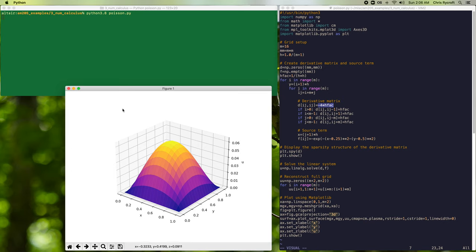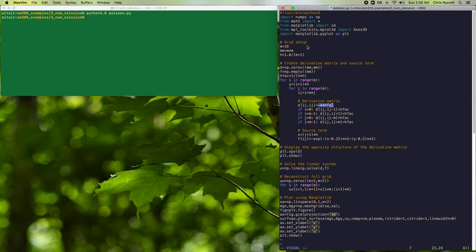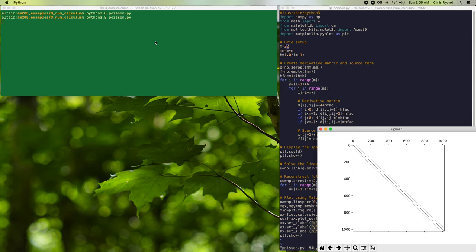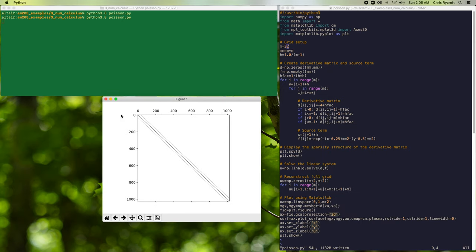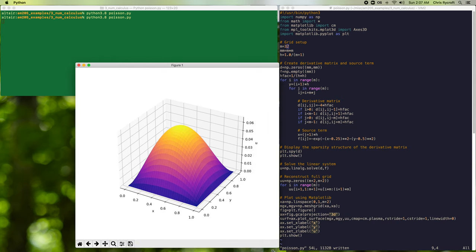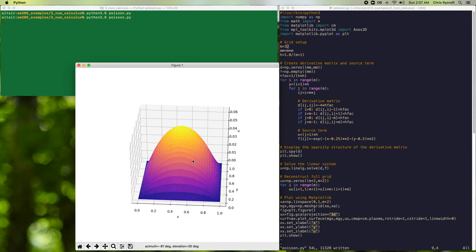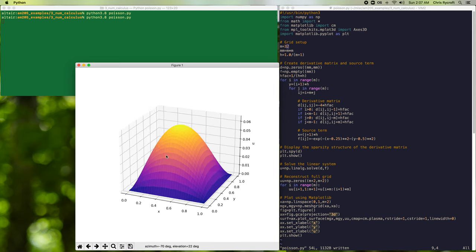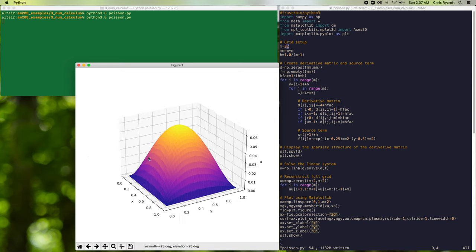So let's now run this program again but we'll make use of a finer grid. So we'll increase the grid to m equal 32. We have a similar sparsity structure to before although now our matrix is 1024 by 1024 large. And again we see the smooth peak in our solution u although now the resolution of this peak is improved.